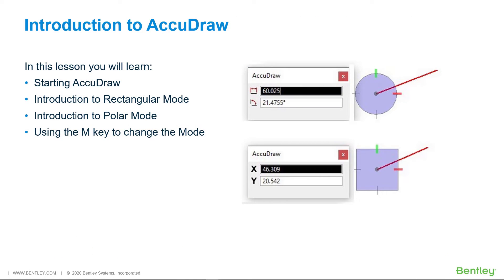AccuDraw is an intuitive drawing aid that helps you define exact distances and angles as you create new elements and manipulating existing ones.